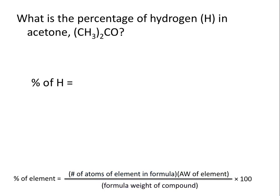What is the percentage of hydrogen in acetone? So how many hydrogen atoms do we have in acetone? Well you'll see that CH3 is in parentheses with a 2 outside of it.